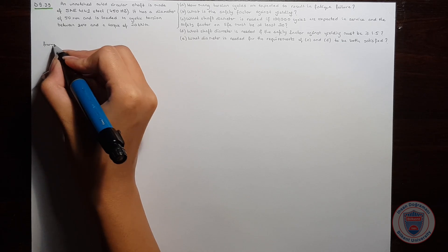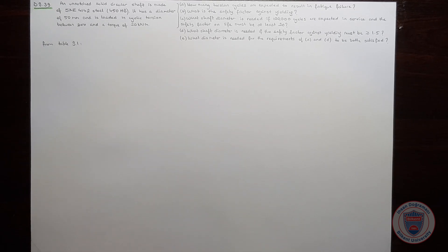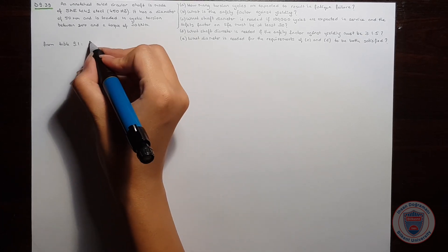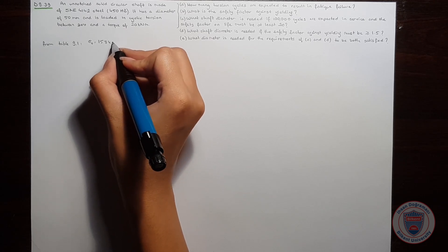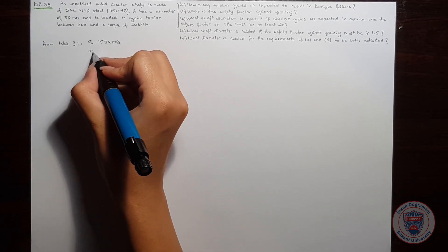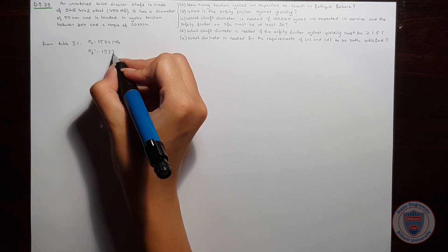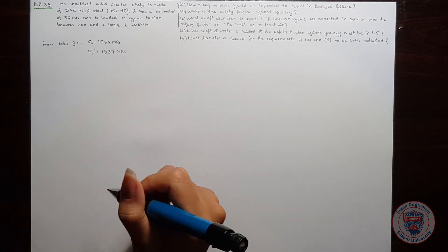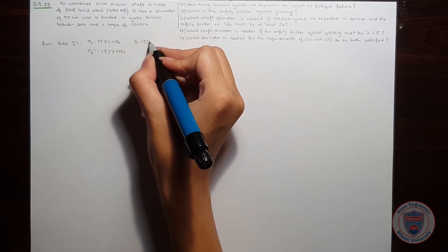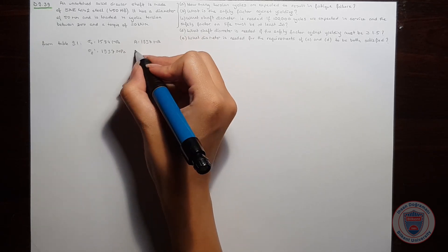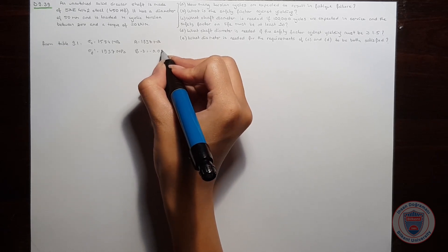To start, we will write the material properties. From Table 9.1, we obtain the yield strength as 1584 MPa, sigma F prime as 1937 MPa, A as 1837 MPa, and B as minus 0.0762.